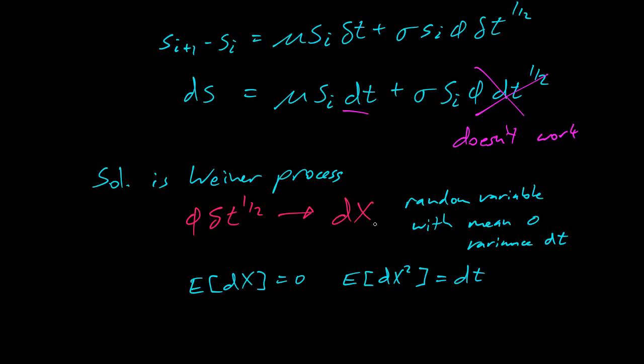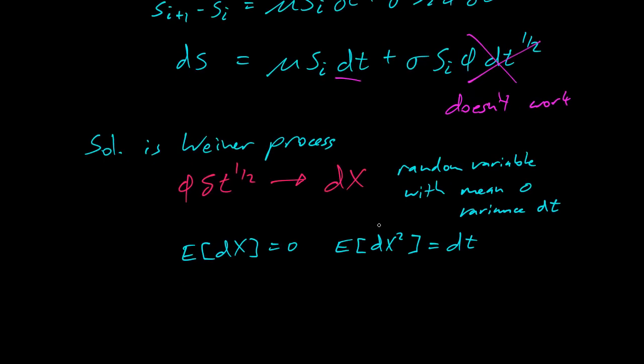So I don't claim to understand this entirely, but I believe this. And so if you believe this is possible, then you can write the equation here as d s equals mu s i dt plus sigma s i. And instead of phi dt to the 1 half, or phi delta t to the 1 half, it's just dx.